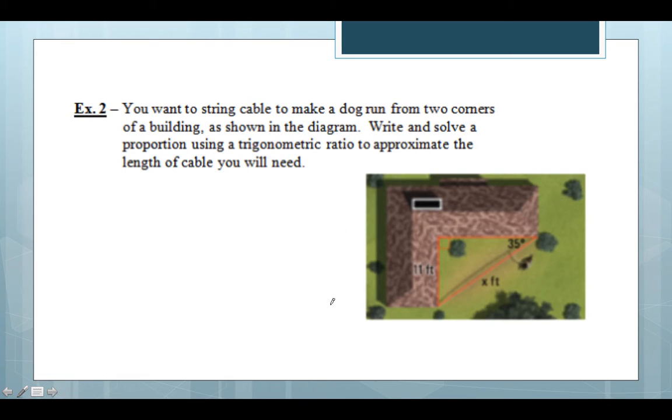Let's see how we can use SOH-CAH-TOA or our trig functions to find an unknown side length in a right triangle. So it's example two. You want to string cable to make a dog run from two corners of a building as shown in the diagram. Write and solve a proportion using a trigonometric ratio to approximate the length of cable you will need. So I want to find this length X.